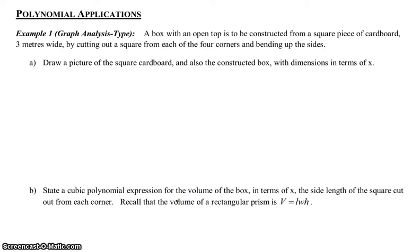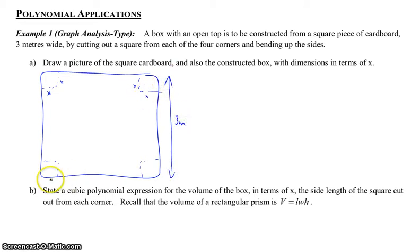So let's read. A box with an open top is to be constructed from a square piece of cardboard, three meters wide by cutting a square from each of the four corners and bending up the sides. This is a little more difficult than your typical one that you might have on a test, but first we want to draw a picture of the square cardboard that we're going to make the box out of. So we draw that. Now, if we cut out corners from this box, and we don't know really how big these corners are going to be that we're going to cut out, so we're going to call that X.